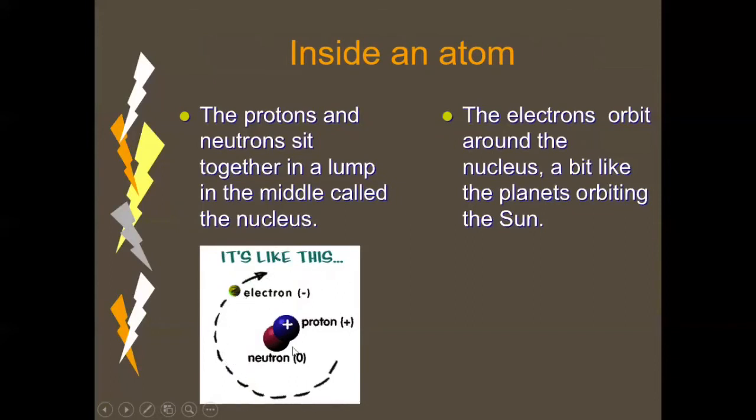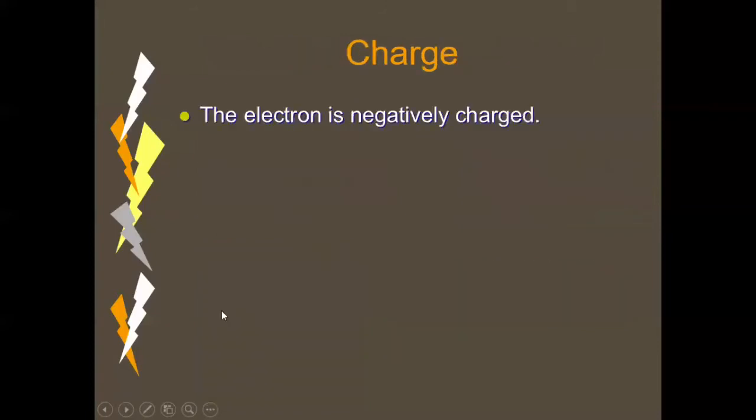We can deduce that electrons will be able to leave this outer shell and move to another atom's outer shell, and protons and neutrons will not be able to be separated that easily from an atom because they sit in the nucleus. So we need to keep in mind that the electrons are those parts of the atom that can move and can be transferred from one atom to another.